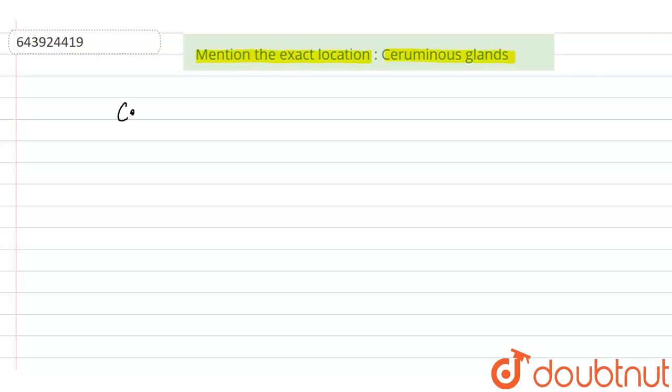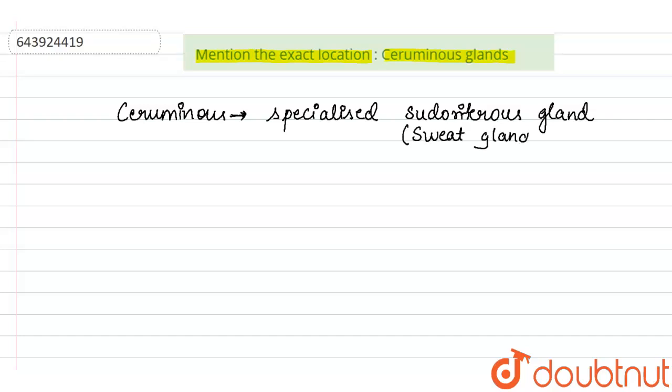So what is ceruminous gland? Ceruminous gland is a specialized sudoriferous gland. What is sudoriferous gland? It is nothing but sweat gland. So it is a modified form of sweat gland.